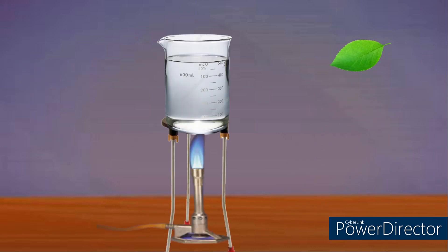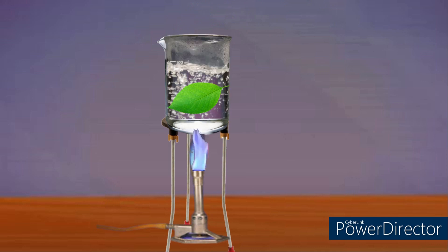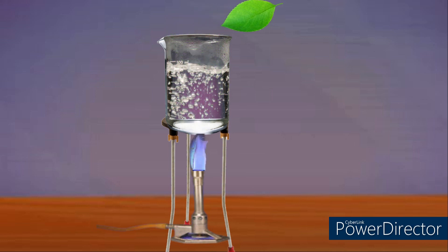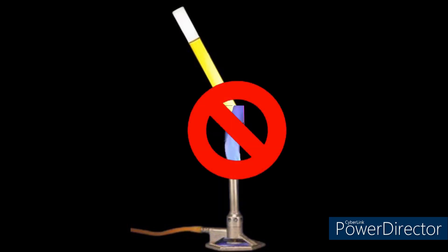After two hours, pluck a leaf from each plant and put them in water and start heating it. When the water starts boiling, take out the leaf from the water.